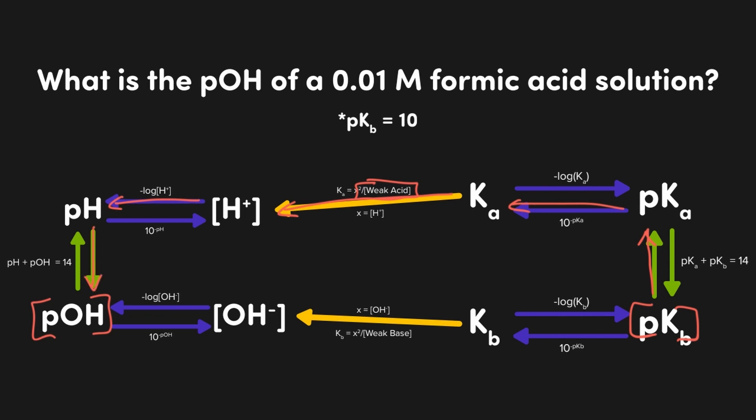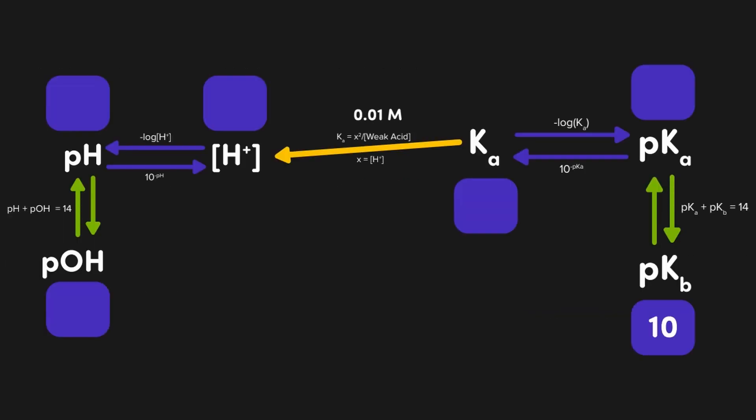If we simplified our map, it would look something like this. And now all we have to do is work out the map. Since the pKb is 10, the pKa would have to be 4 and the Ka 10 to the negative 4.